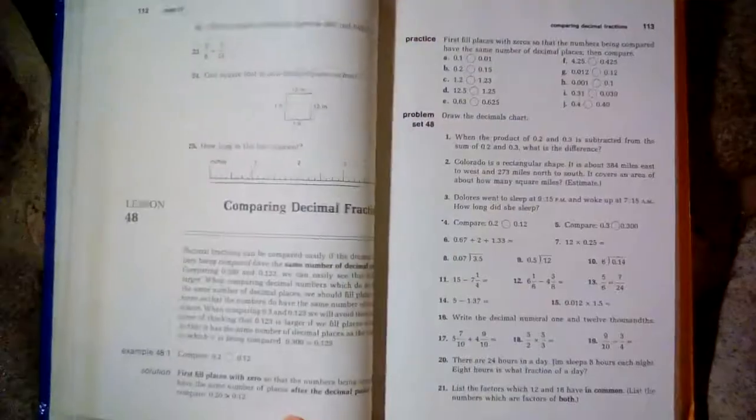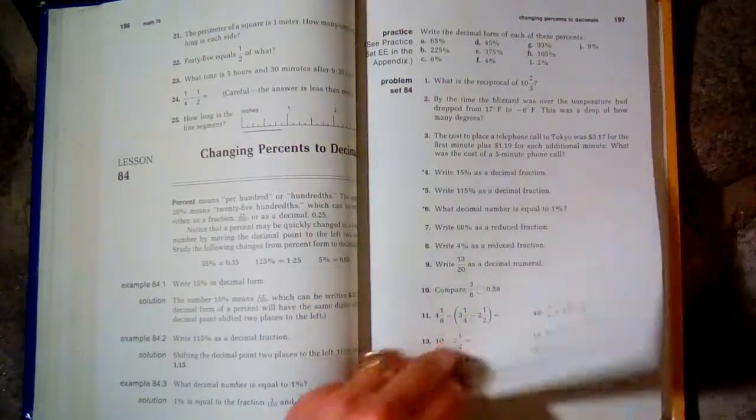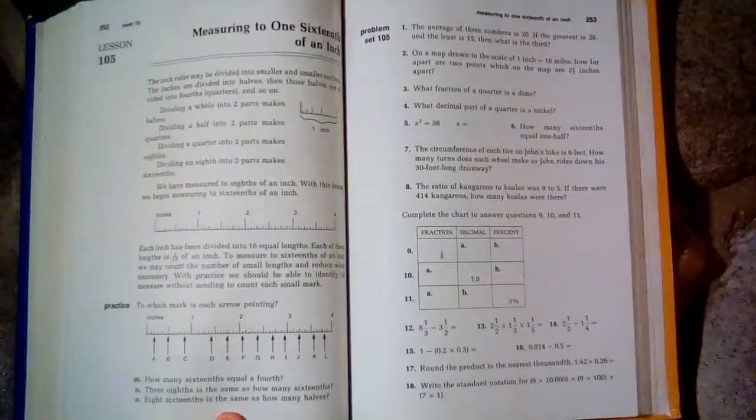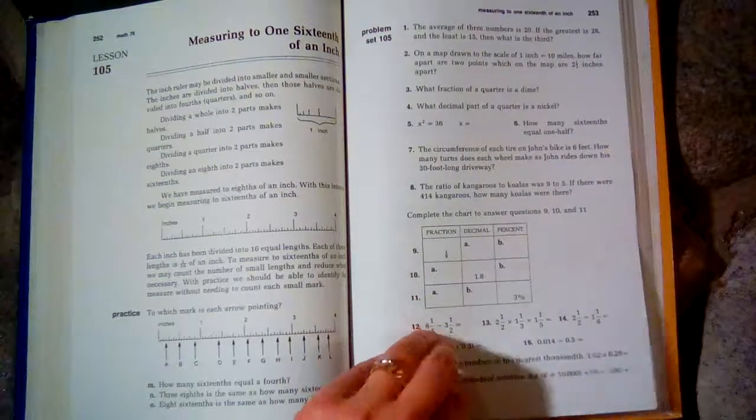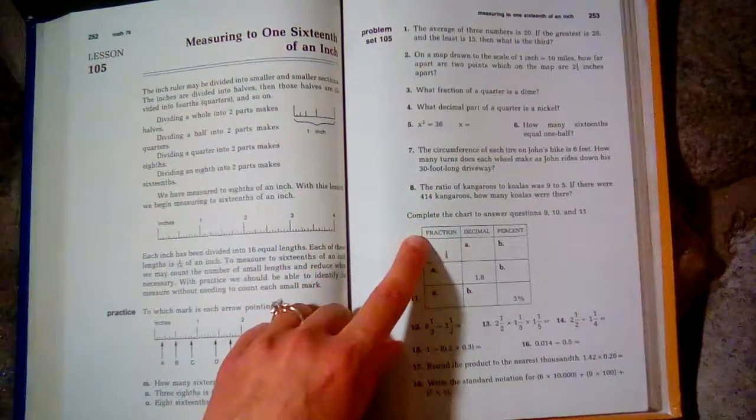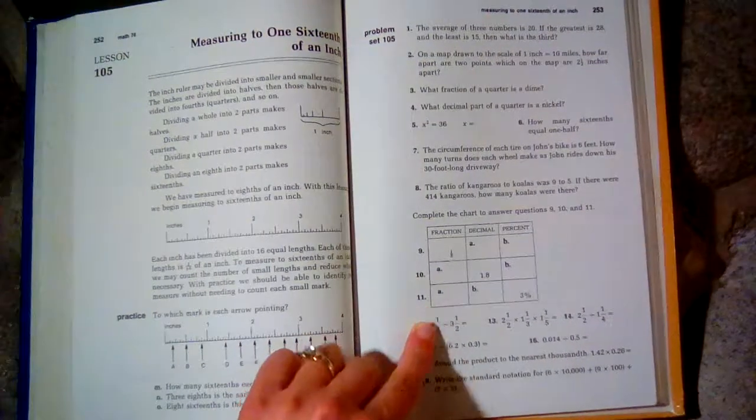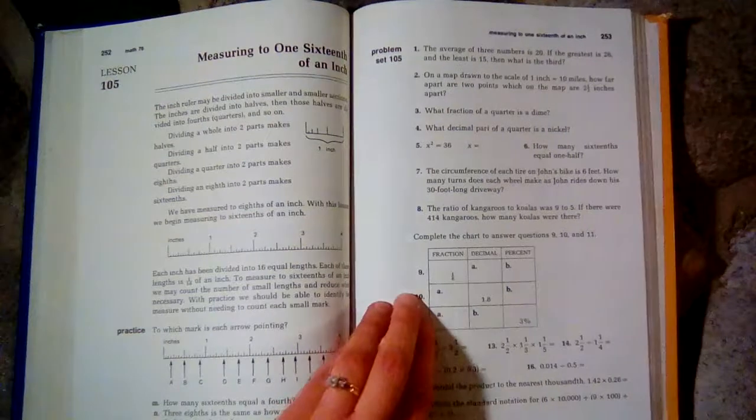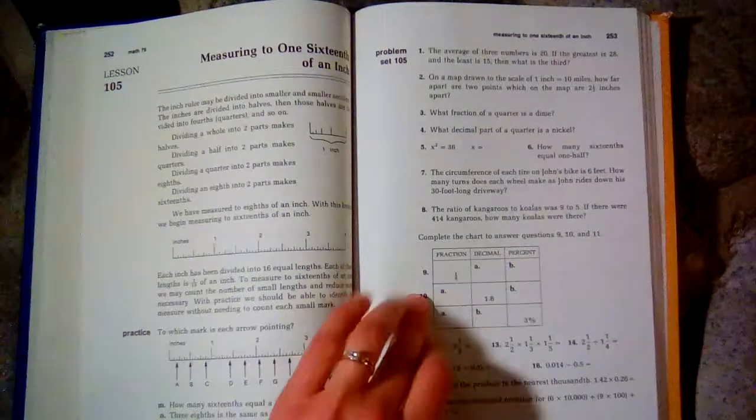I'll show you later on in the book. It follows the same pattern throughout the whole thing. This is the second edition. You'll notice that it does not contain the little parentheses that tell you what lesson to go back to in case you forgot how to do that problem.